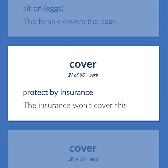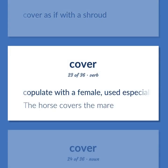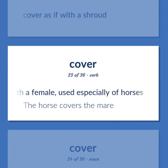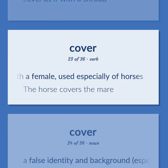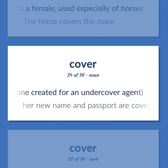Protect by insurance — the insurance won't cover this. Cover as if with a shroud. Copulate with a female, used especially of horses — the horse covers the mare. A false identity and background, especially one created for an undercover agent — her new name and passport are cover for her next assignment.